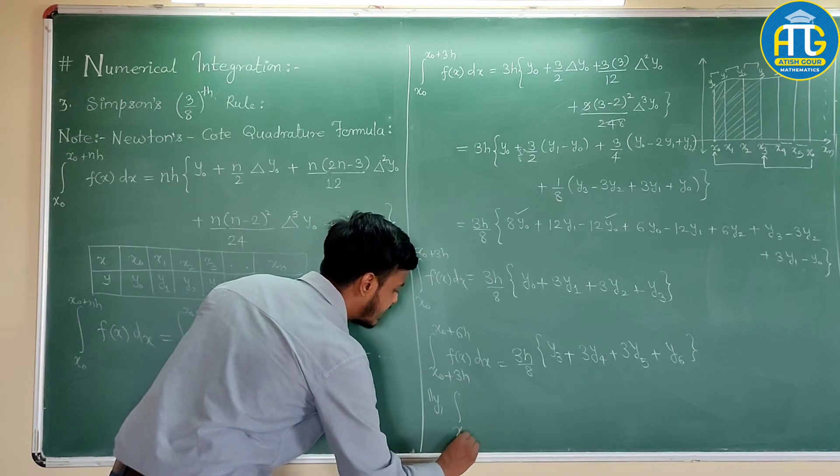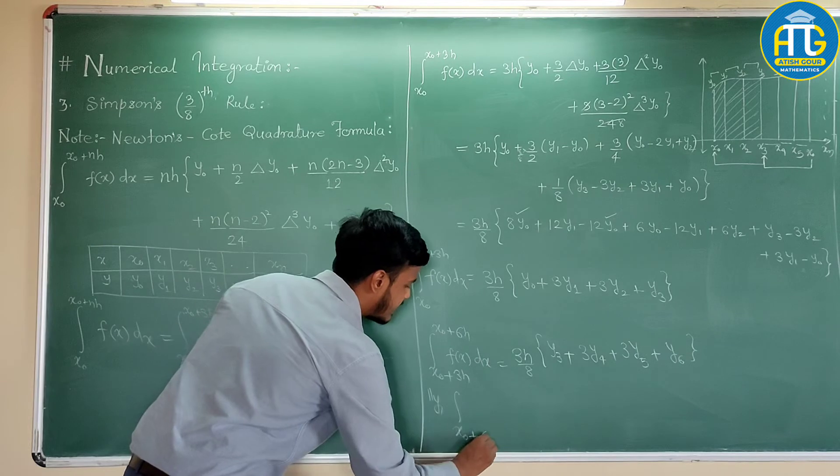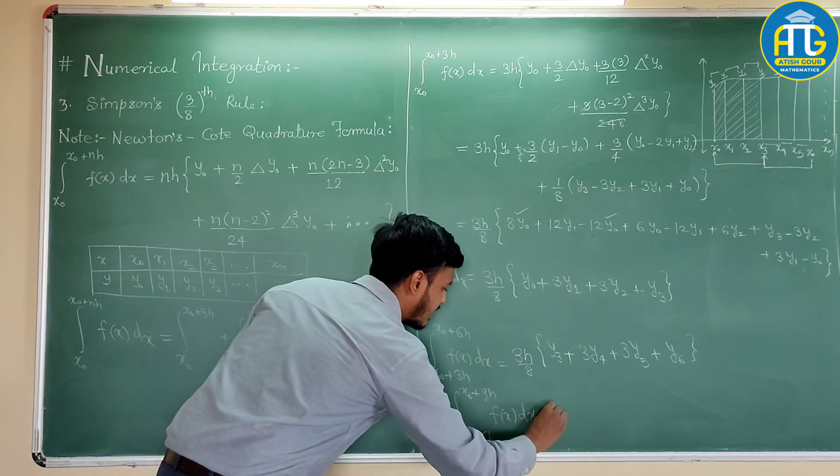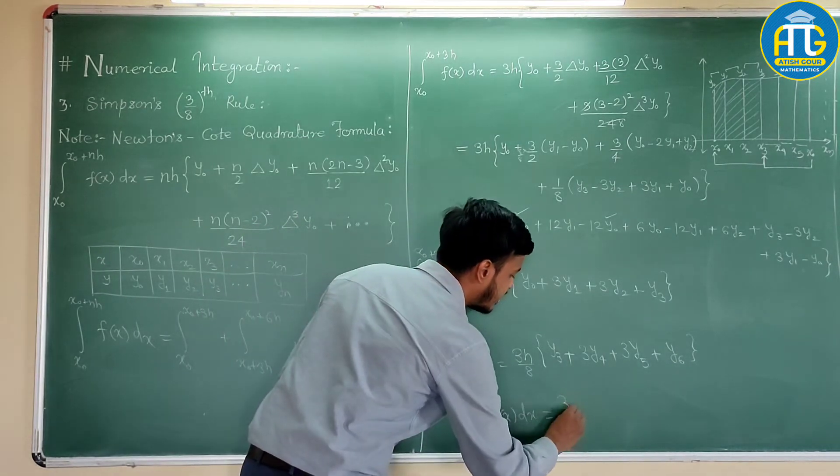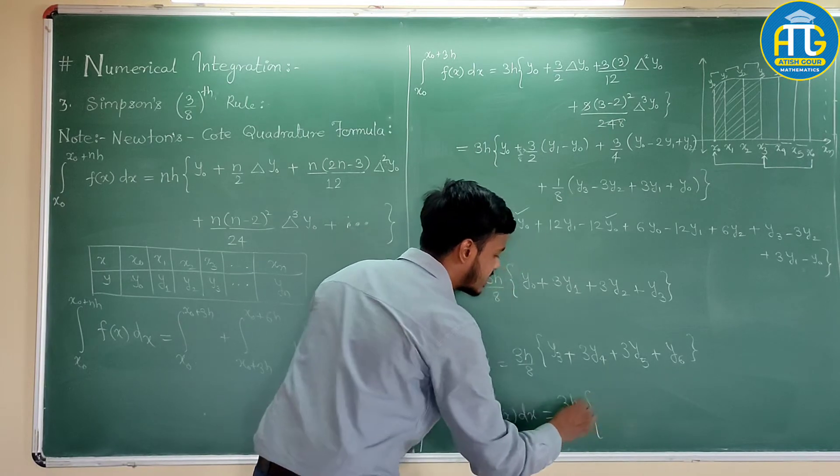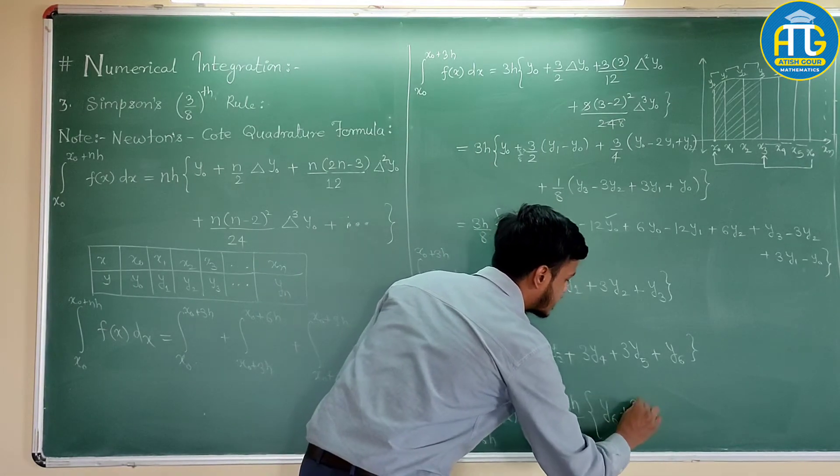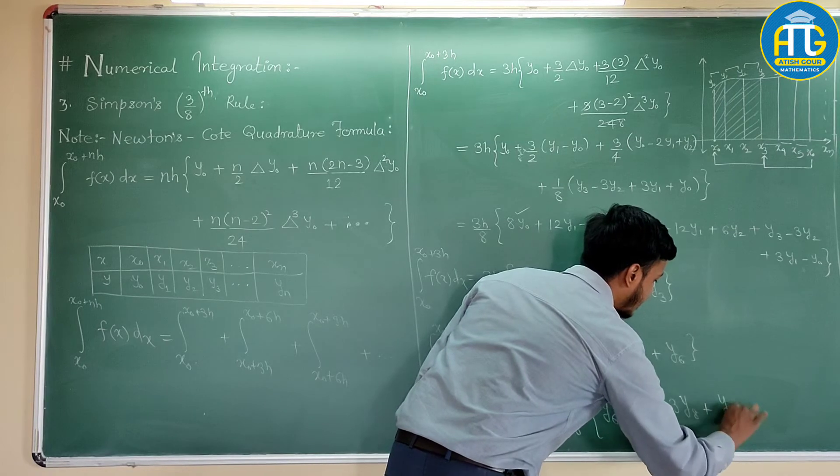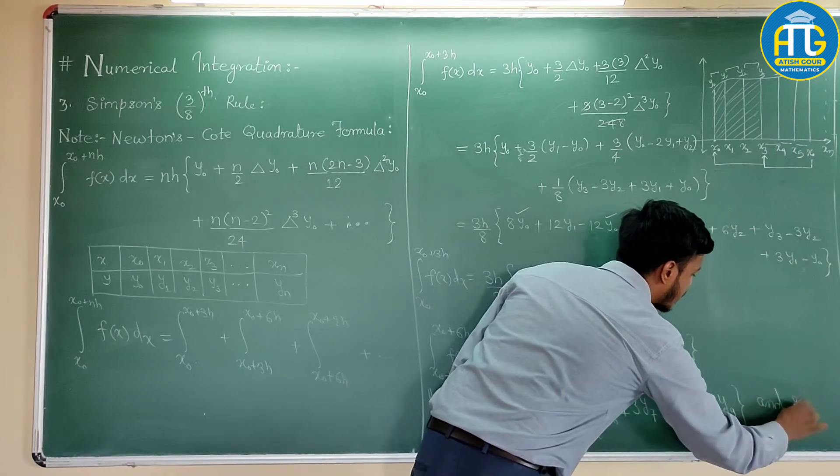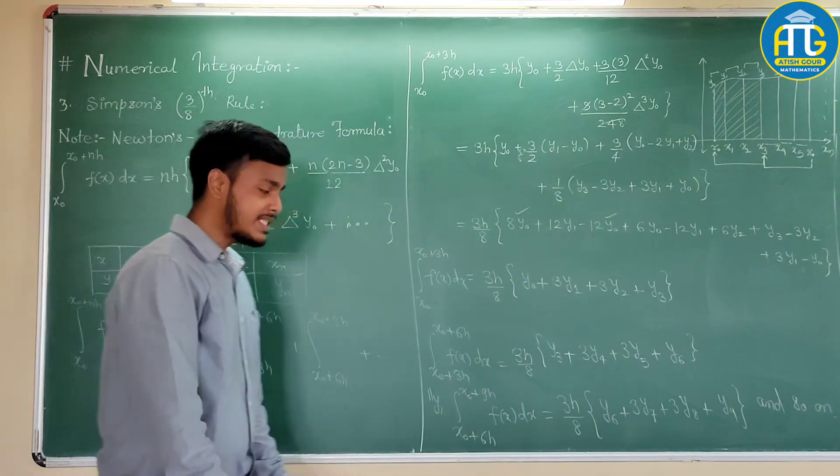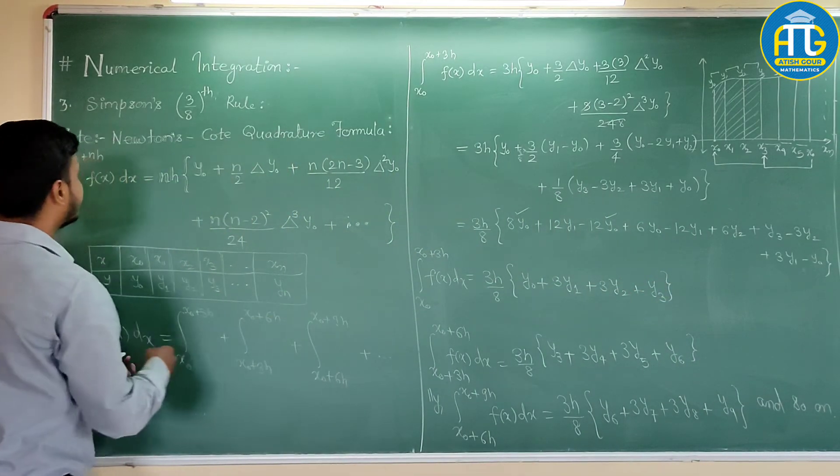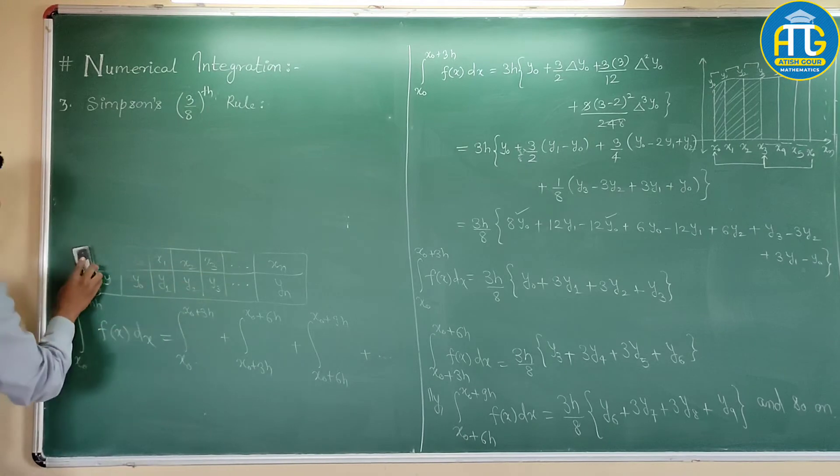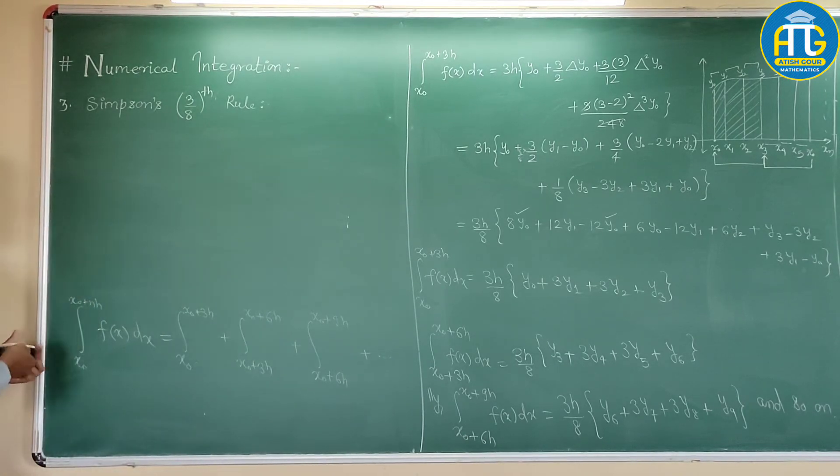Similarly, you can find out the next one, that is integration from x0 plus 6h to x0 plus 9h, f of x dx. You can find this one very easy, just increment the value of suffix by 3. So this would be y6 plus 3y7 plus 3y8 plus y9, and so on. Now, what you can do is, you can substitute these values over here. And when you substitute those values in this, say equation A, you will get the required Simpson's 3/8 rule formula.